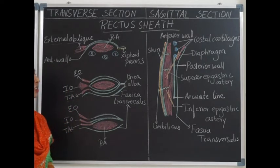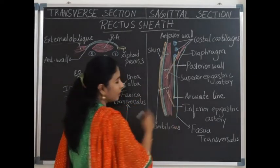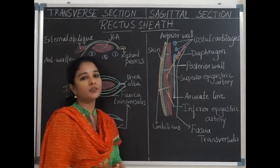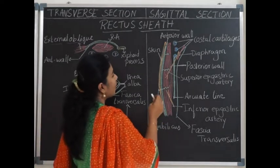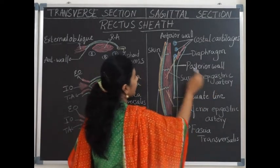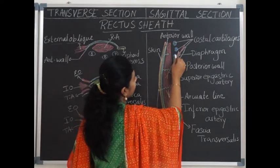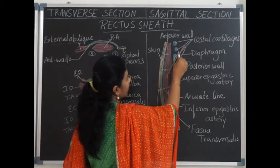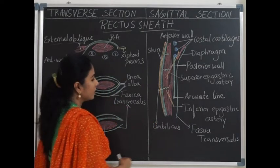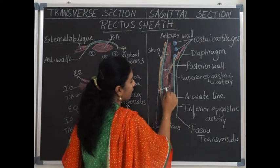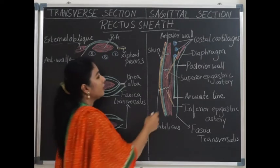Now let's see the contents of the rectus sheath. The main content is the rectus abdominis muscle, and there is a small muscle in its lower part called the pyramidalis. These two muscles are the main contents. Regarding blood vessels: the superior epigastric artery runs from above and enters by piercing the rectus sheath between the costal margin and the diaphragm, near the xiphoid process, to supply the rectus abdominis. The inferior epigastric artery runs in front of the arcuate line from below, and both arteries anastomose with each other.